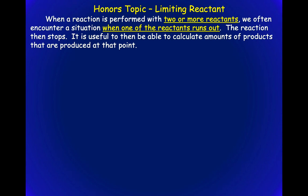When a reaction is performed with two or more reactants — let's say I give you two reactants and ask how much product we're going to produce — instead of giving you one reactant, we'll have a situation where one of the reactants runs out. The reaction continues in the correct mole ratio until one of them is no longer there, because we've converted them to products.